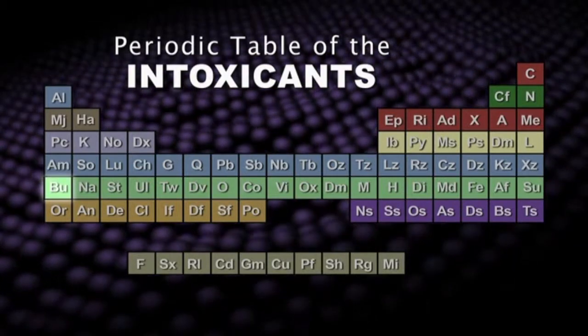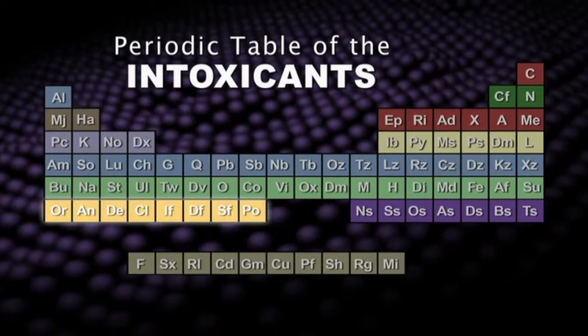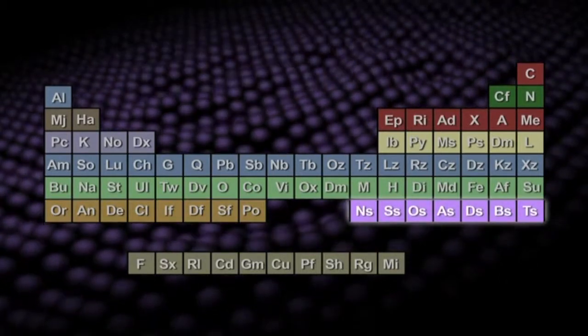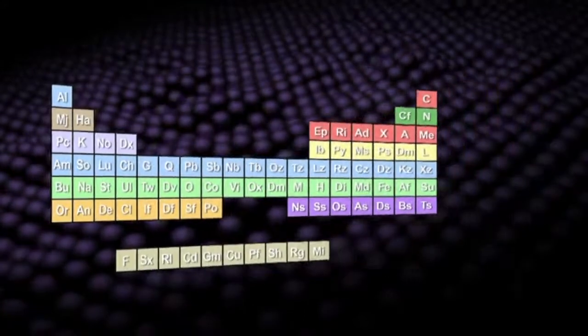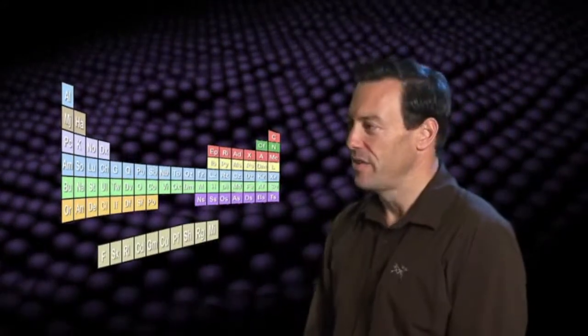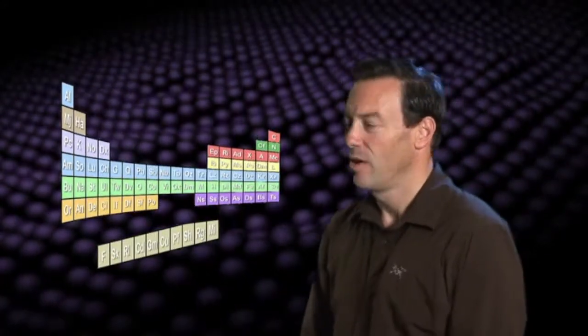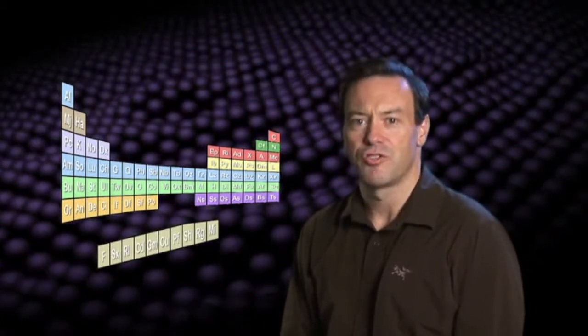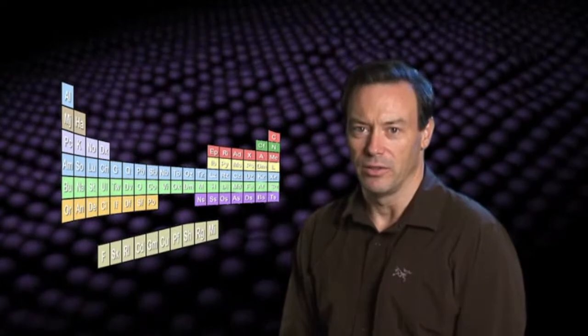At the bottom of our periodic table of the intoxicants, we find the inhalants and the anabolic androgenic steroids. This is the dopamine hypothesis. What all addictive drugs have in common, whether they are uppers or downers, strong or weak, legal or illegal, is their ability to release dopamine in the pleasure areas of the brain.